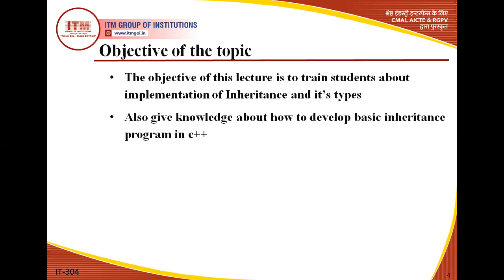The objective of this lecture is to train the students about implementation of inheritance and its types. This is the main aim of today's topic. We will also give you knowledge about how to develop a basic inheritance program in C++. It is necessary that before understanding any concept, you must know how to develop the basic inheritance program, so today I will be trying to give you the basic program of the topic.